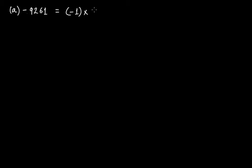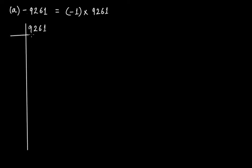Now take the prime factorization of 9261. First check whether this number is divisible by 3 or not. We know that if the sum of the digits is divisible by 3, then the whole number is divisible by 3. So 9 plus 2 is 11, plus 6 is 17, plus 1 is 18. Yes, 18 is divisible by 3, therefore this number is divisible by 3. Dividing: 3 goes into 9261 giving 3087, then further by 3 giving 1029, then by 3 giving 343.